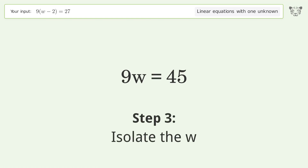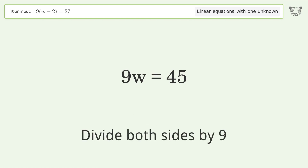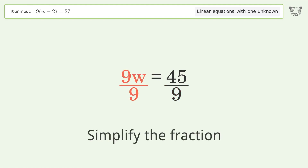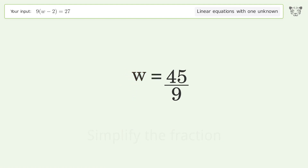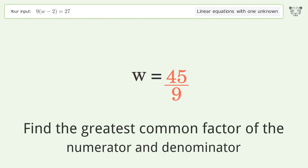Isolate w by dividing both sides by 9. Simplify the fraction, then find the greatest common factor of the numerator and denominator.